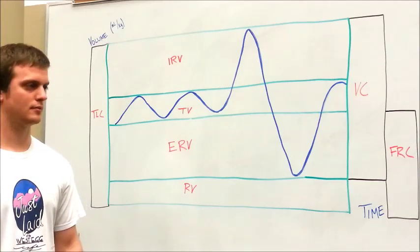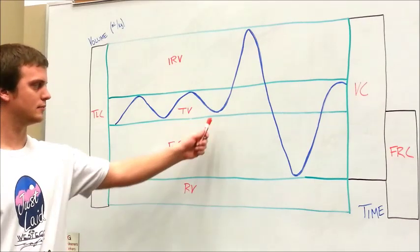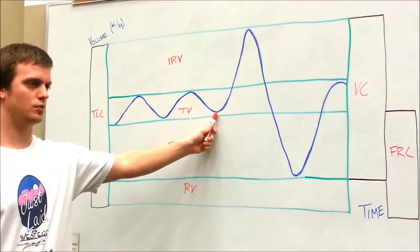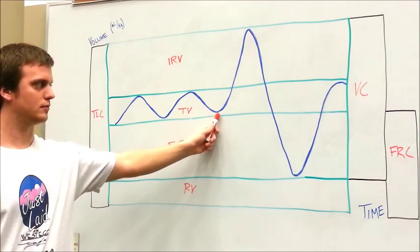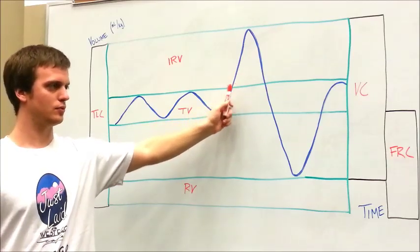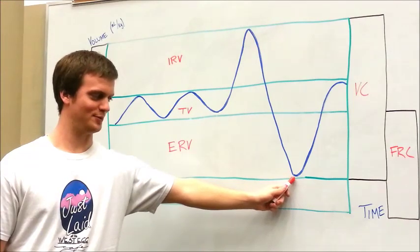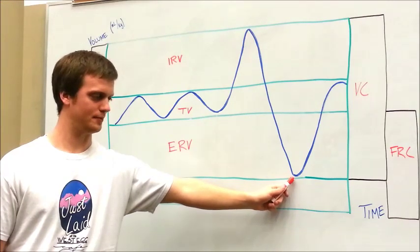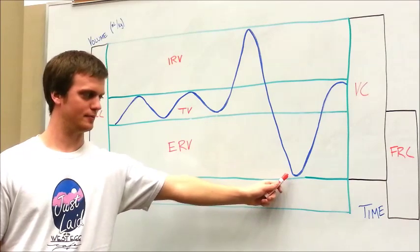Next, we just caught our patient at the very bottom of their tidal volume. So, they just let out all the air naturally. Next, we're going to ask the patient to expire as much as they can. You can see that our patient is pointing to the lowest point that they can.